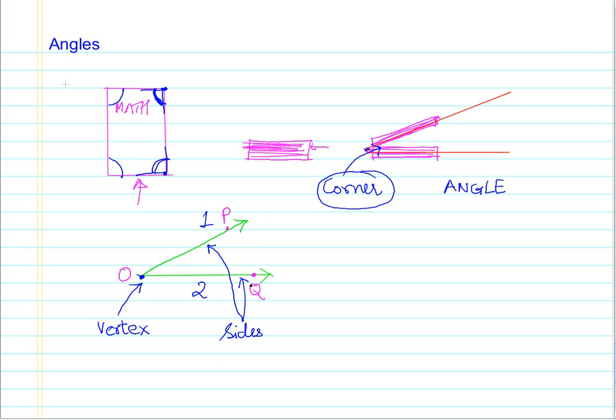So, now this angle is denoted as angle P O Q. And it is important to note that the middle letter denotes the vertex. That is what we must definitely keep in mind. That the vertex is always written in the middle. So, just to reiterate, this is the vertex of the angle.